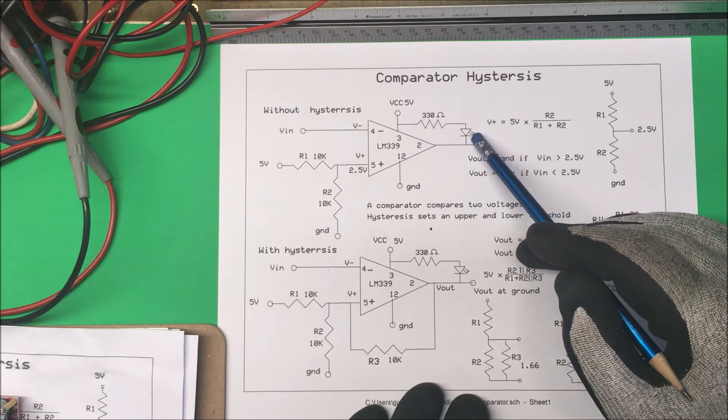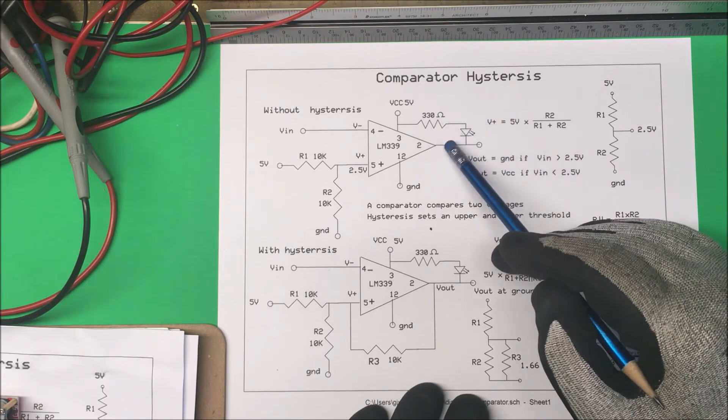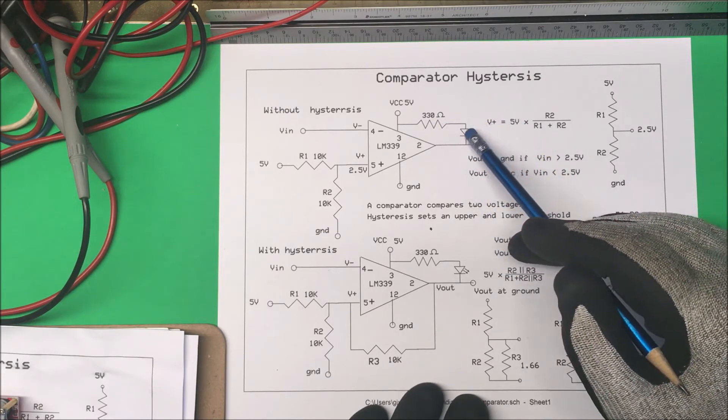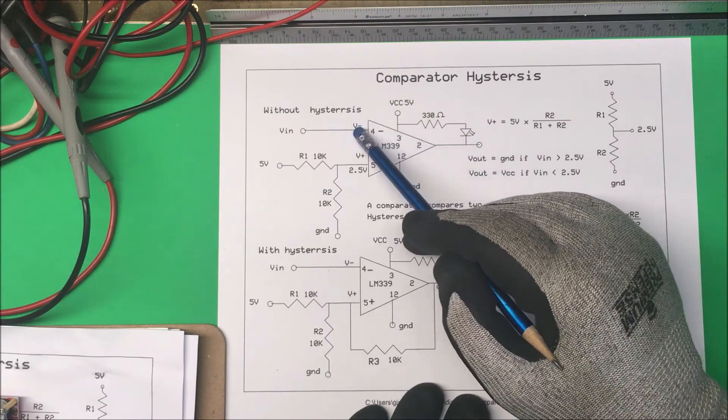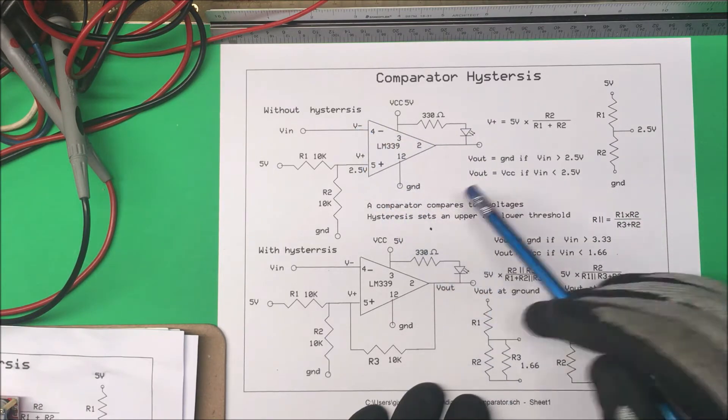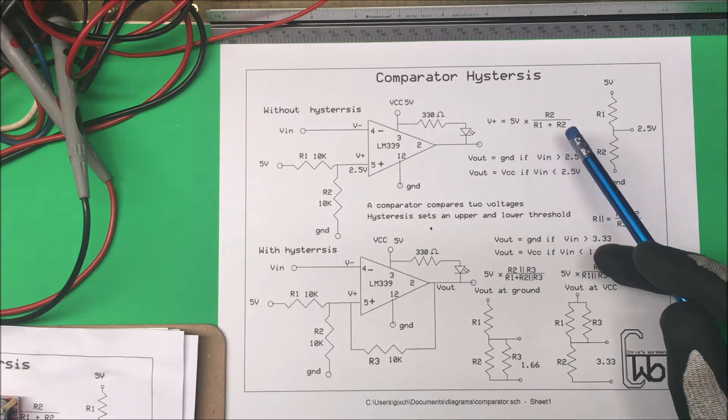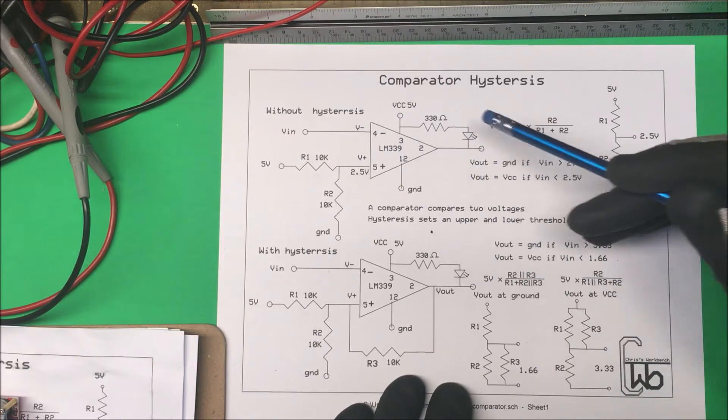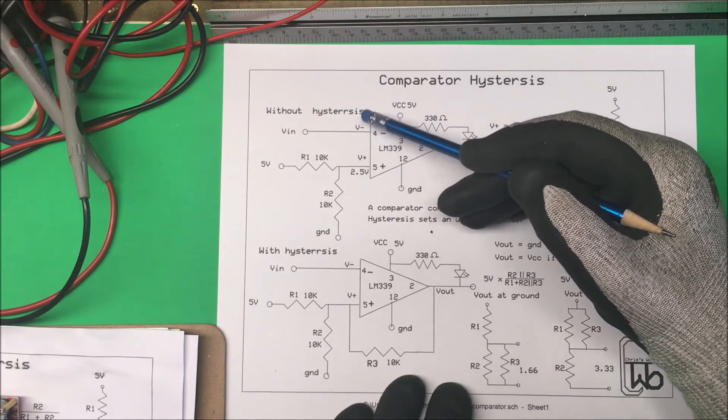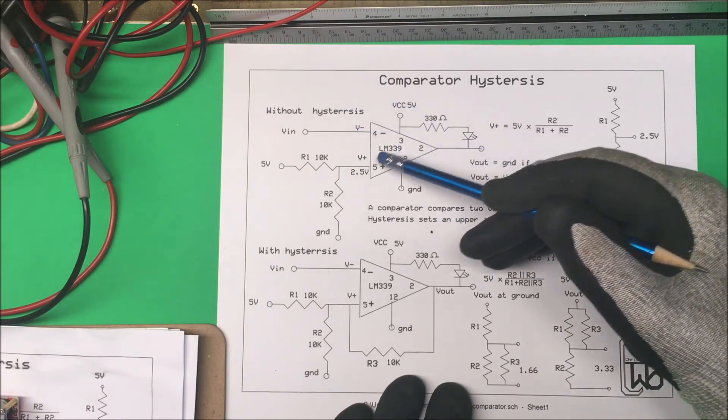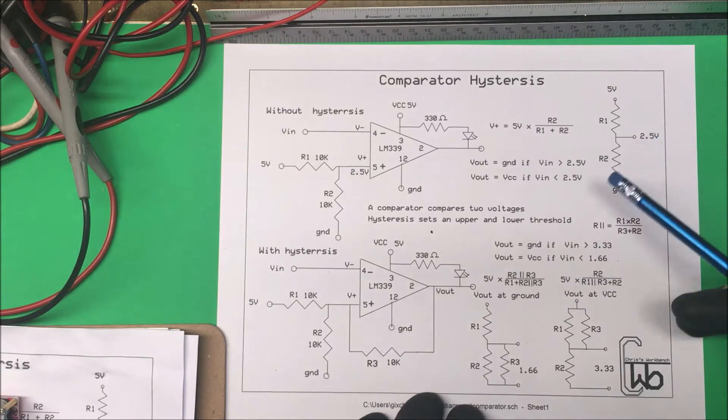So that's why I have the LED up here, because when this goes to ground I want the LED to light, and it's going to go to ground when this voltage is higher than the 2.5 volts down here. So that's all there is to a comparator. Now we don't want this switching on and off too fast when the voltage is fluctuating around the 2.5 level here, so we're going to add some hysteresis.